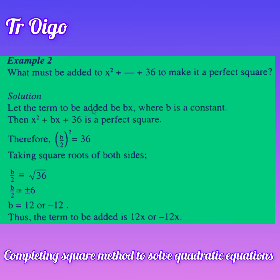To look into the solution, first of all we will let the part that is missing be bx, because it is the middle part that is missing. The coefficient of that middle part is b and the variable is x, where b is a constant — and that constant is what we are looking for. So the expression is going to look like this: x squared plus bx plus 36.